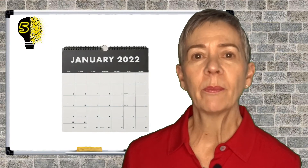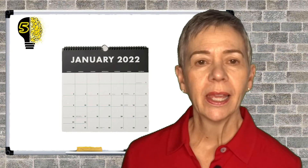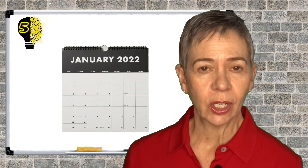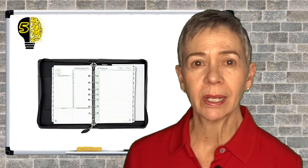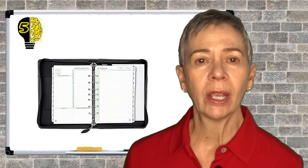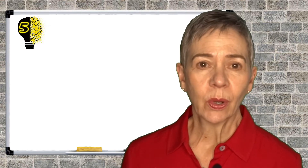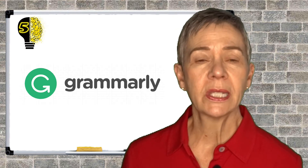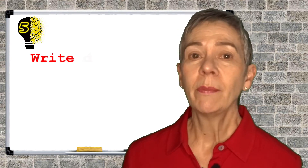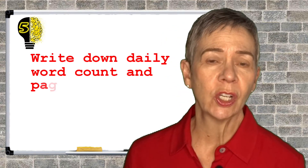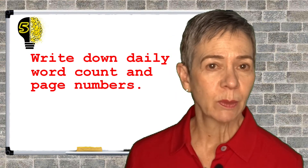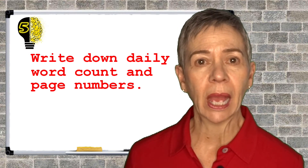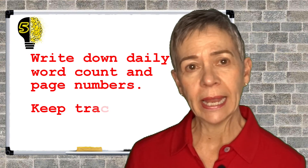Tip number five: every writer needs a paper calendar in addition to an electronic one. When I retired from university teaching, I tried to give up my paper day timer — that leather-bound book I'd had for years — and for a whole year I went without it and really missed it. Here's how I use it: every day I use Grammarly to check my previous day's writing. How do I know what I wrote the day before? Because I wrote down the word count and the page numbers in my paper calendar. I just go back to see where I was and return to that page to begin. It's also interesting to look back at the calendar after finishing a project and see how productive you were — what days worked best, which days you wrote more, when you were more inspired.